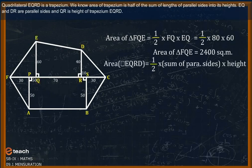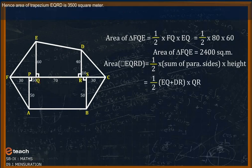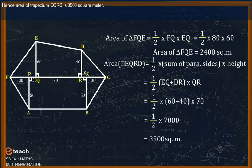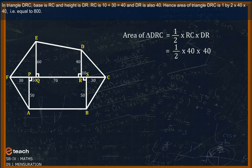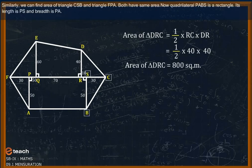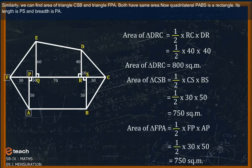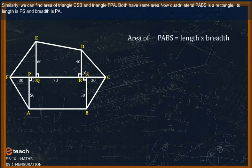Quadrilateral EQRD is a trapezium. The area of a trapezium is half the sum of its parallel sides multiplied by its height. EQ and DR are parallel sides, and QR is the height of trapezium EQRD. Hence, area of trapezium EQRD is 3500 square meters. In triangle DRC, base RC = 10 + 30 = 40 and DR = 40. Hence, area of triangle DRC = (1/2) × 40 × 40 = 800 square meters. Similarly, we can find the area of triangle CSB and triangle FPA, which have the same area.